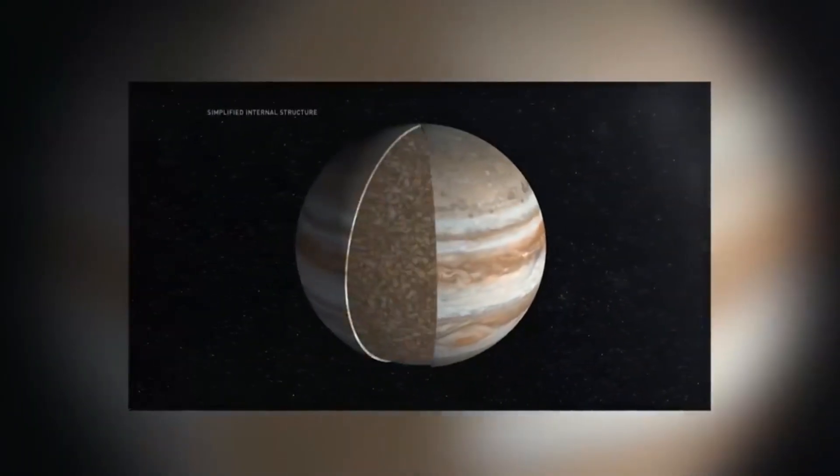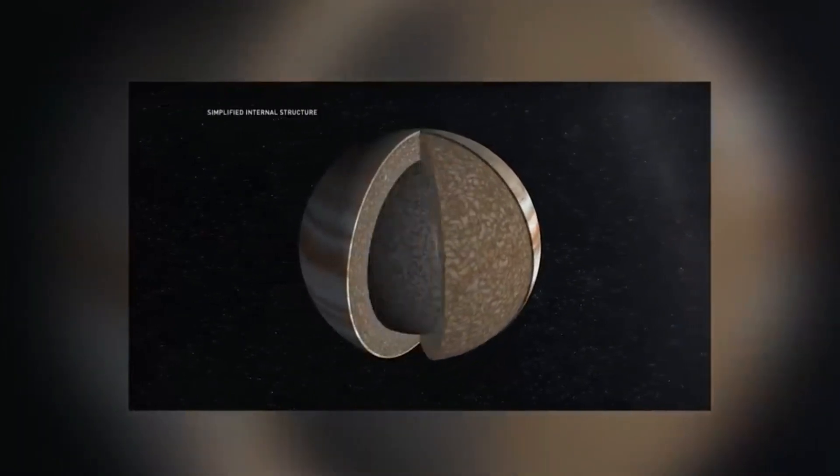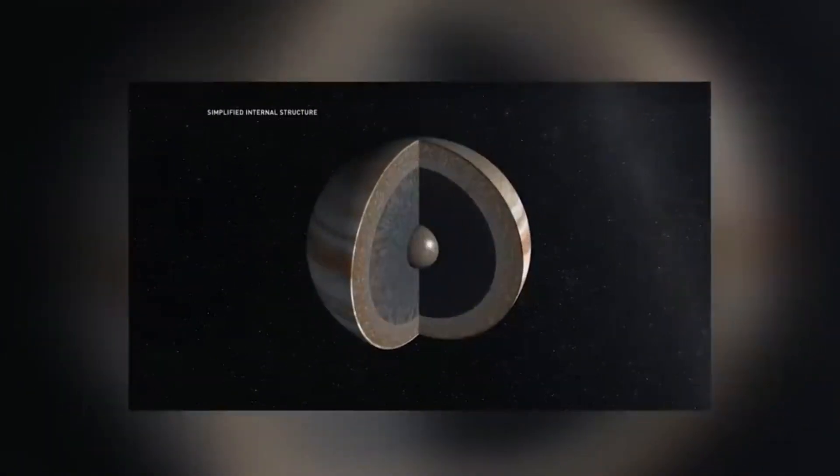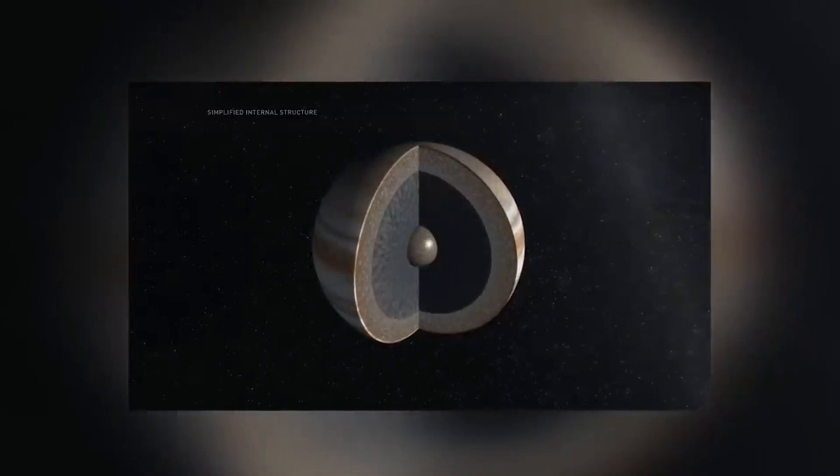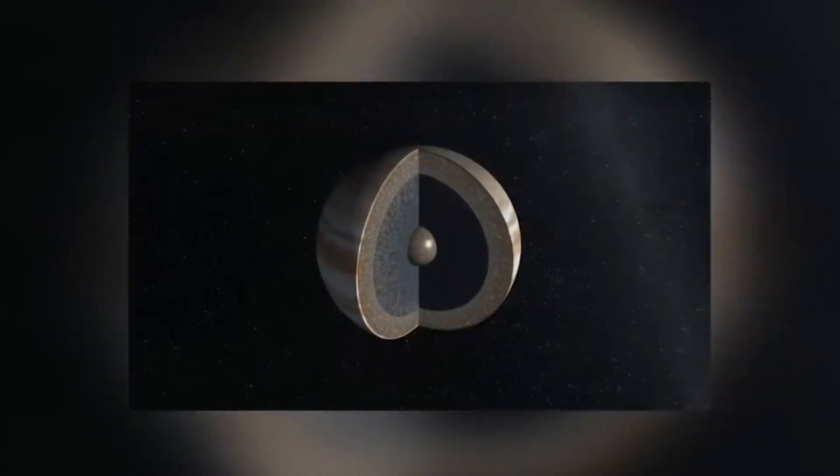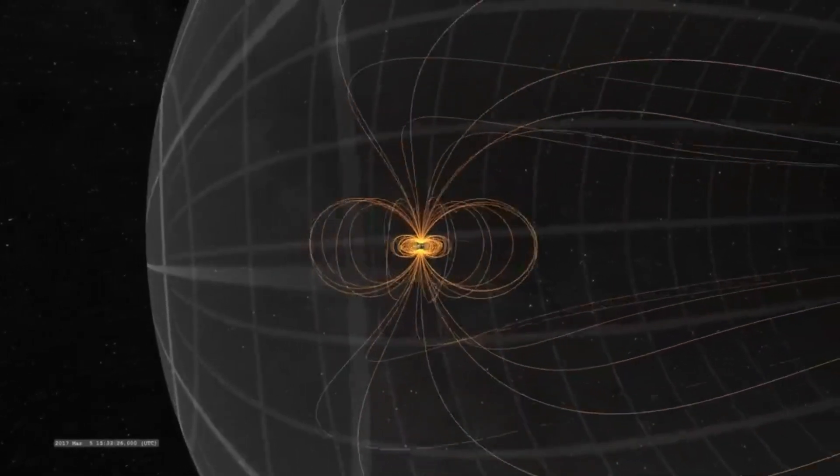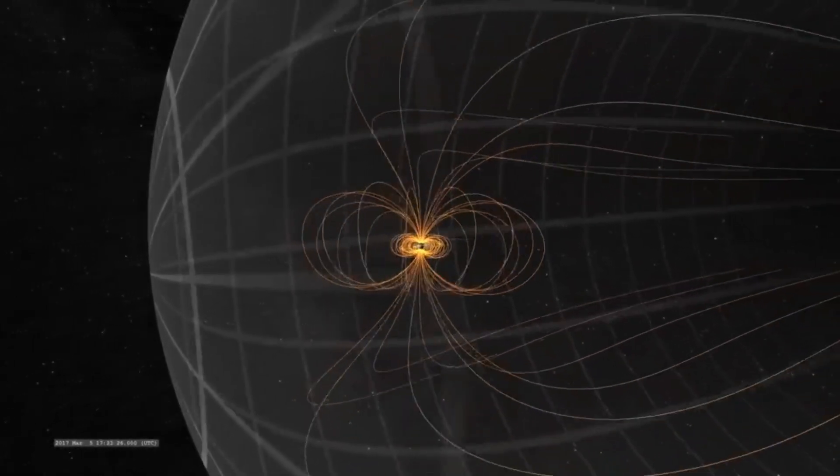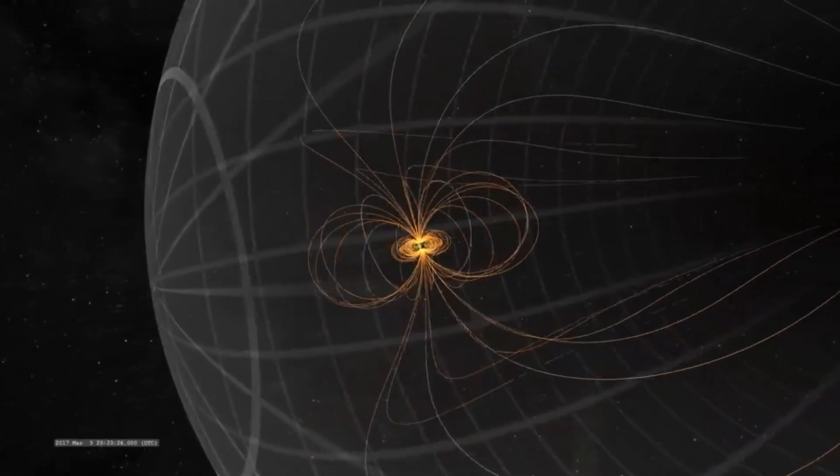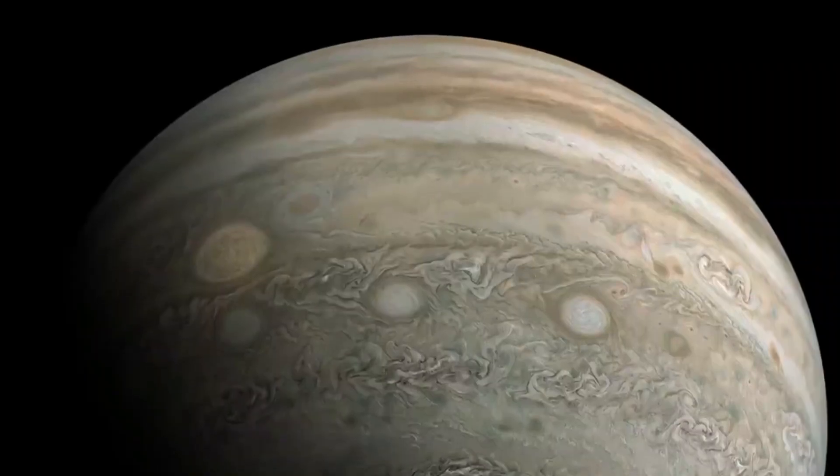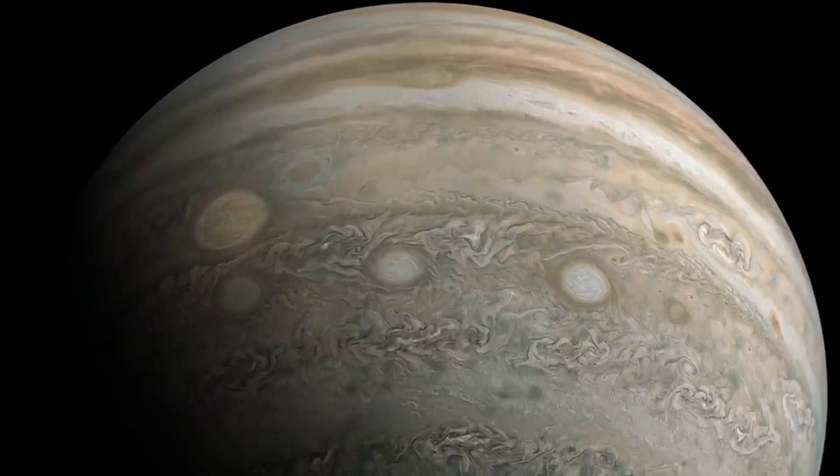Earlier theories said that Jupiter's core was made up of a solid rock structure with heavy metals like iron and nickel, as well as a range of ices that don't exist on Earth. This idea is based on the fact that Jupiter has a strong gravitational field, which shows that the planet has a dense, heavy core in the middle of its interior. But as more proof has come in over time, scientists' ideas about what's going on inside this mysterious gas giant have changed.